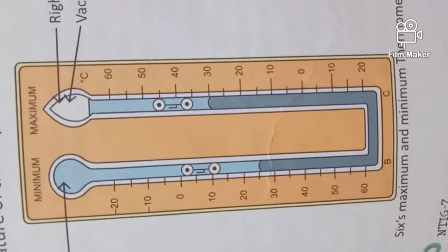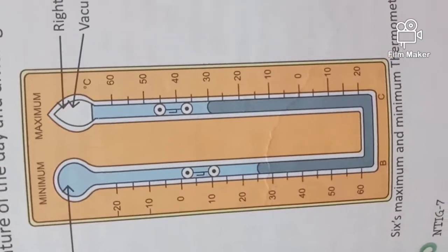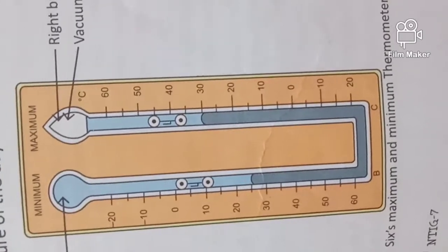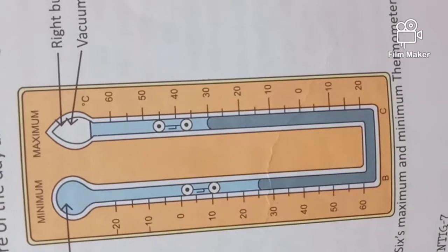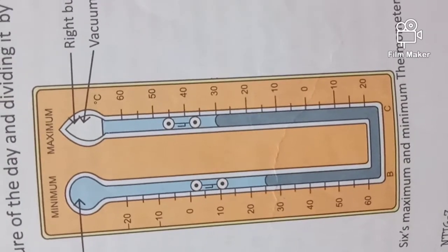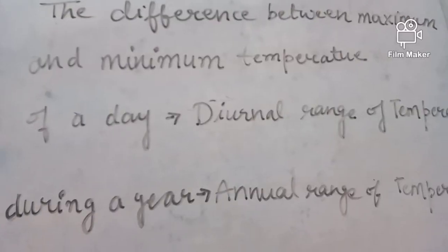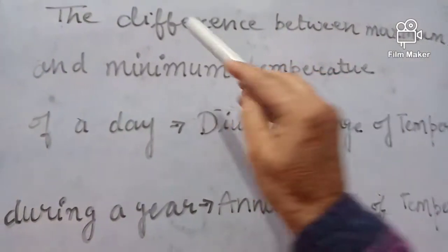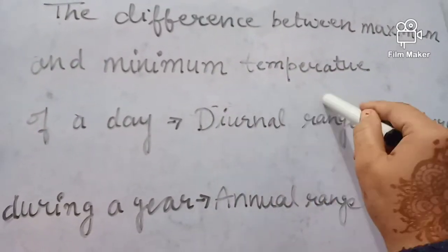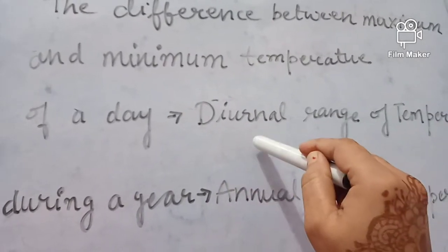In a Fahrenheit thermometer, the freezing point is 32 degrees Fahrenheit and the boiling point is 212 degrees Fahrenheit. To revise: the difference between maximum and minimum temperature of a day is called the diurnal range of temperature.